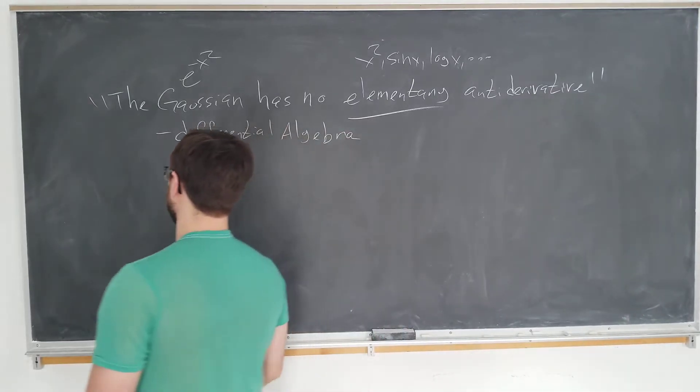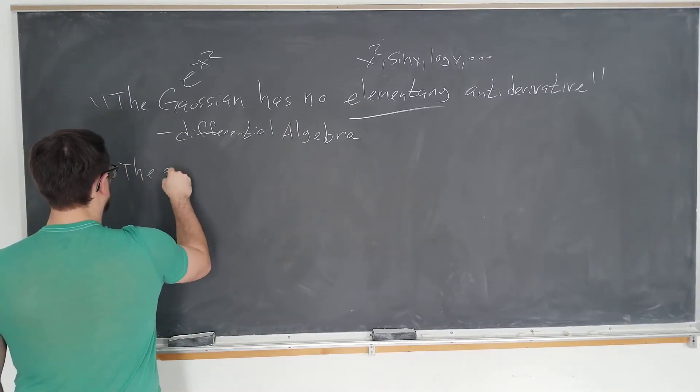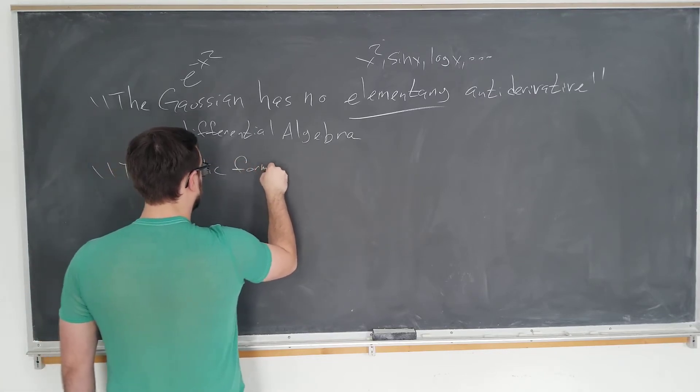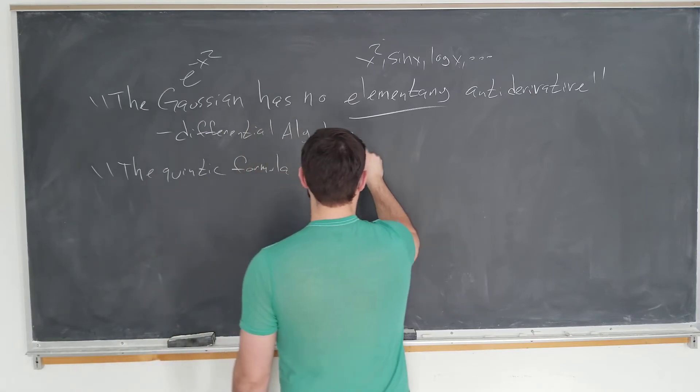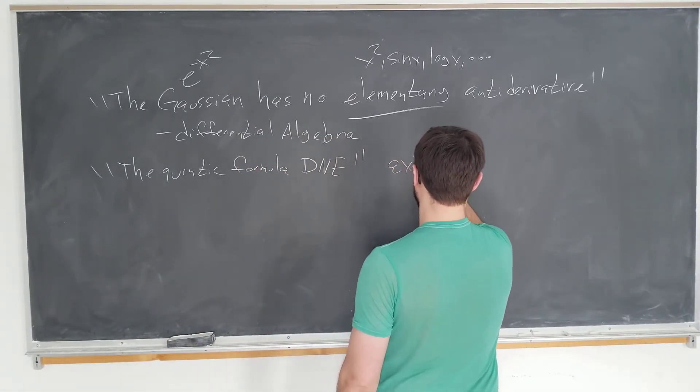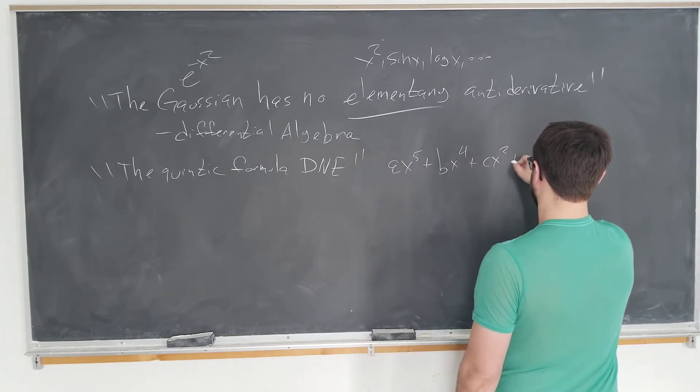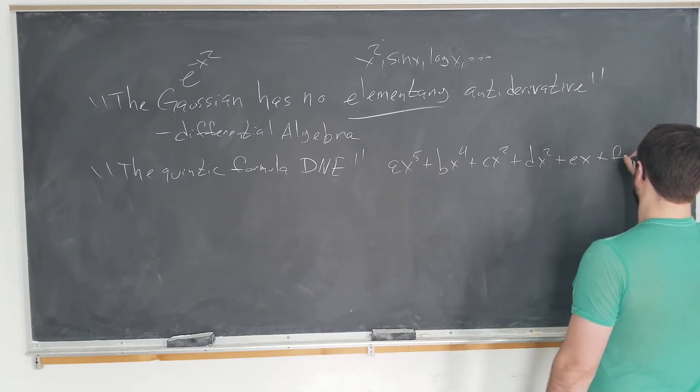So let's go ahead and talk about the quintic formula. The quintic formula does not exist. So basically a quintic is ax to the fifth plus bx to the fourth plus cx cubed plus dx squared plus ex plus f equals zero.